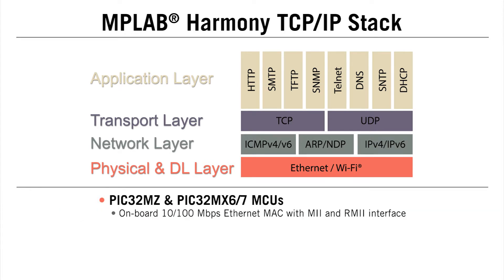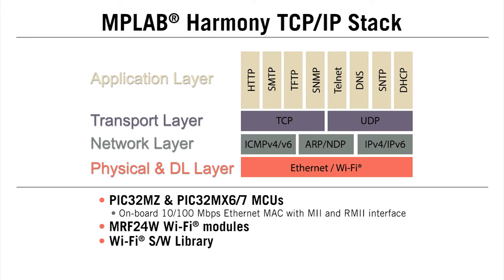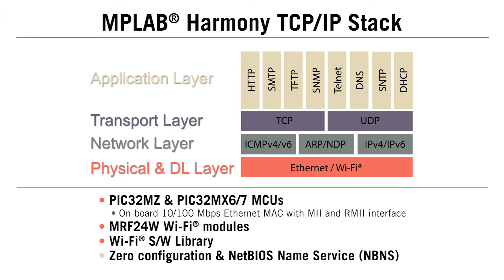Microchip also offers PIC32MZ and PIC32MX MCUs with an onboard Ethernet MAC, MRF24W Wi-Fi modules, and a Wi-Fi software library to implement both Ethernet and Wi-Fi networks. The stack also includes Zeroconf configuration and NetBIOS name service.